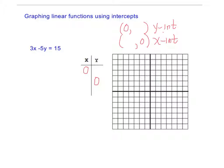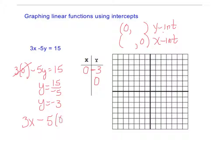Okay? So if I let x be 0, I would have 3 times 0 minus 5y equals 15. This is 0. Divide both sides by negative 5 and y equals 15 over negative 5, which is negative 3. Then if I let y be 0, this becomes 0, and I'm left with 3x equals 15, x equals 5.